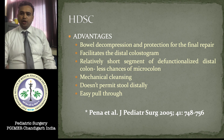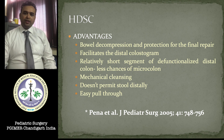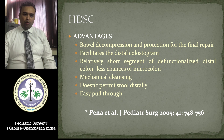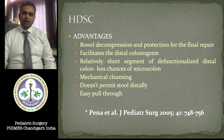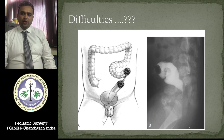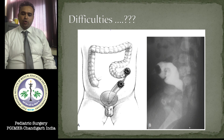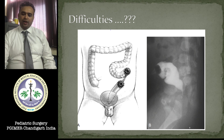These patients have advantages with bowel decompression as well as protection for the final repair. It facilitates the distal colostogram, and there is a very small segment of defunctionalized distal colon, hence less chance of microcolon — this is a disadvantage if you make a transverse colostomy. It is also easy for pull-through, whereas it becomes difficult when you make a colostomy at the mid or distal sigmoid, because a larger mobile part of the sigmoid remains, increasing the chance of prolapse and leaving a very short distal stump.